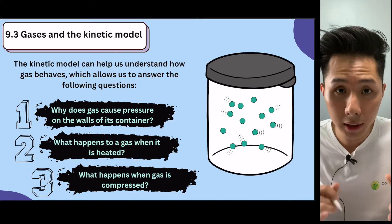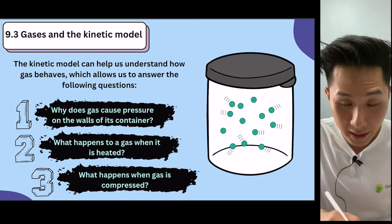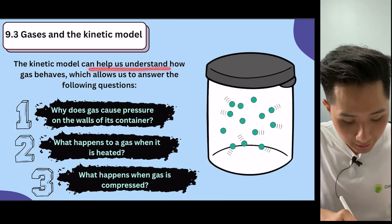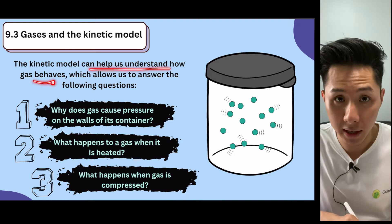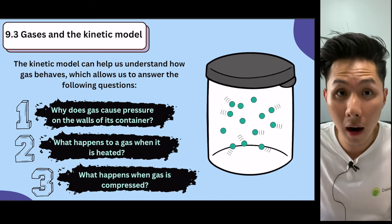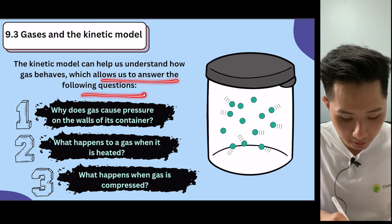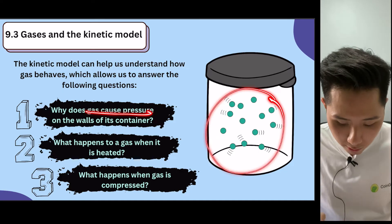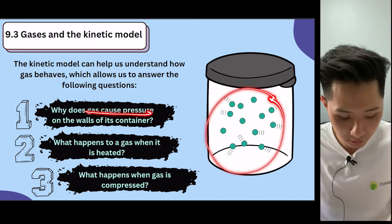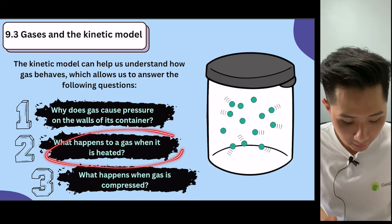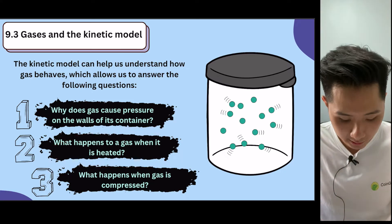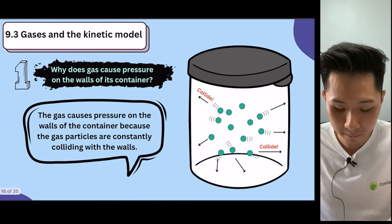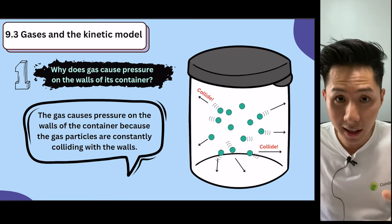And now we are going to dive deeper into the gases, the third type of matter. So the kinetic model can help us understand how gas behaves, how they move around. And this allows us to understand the following questions. Why does gas cause pressure on the walls of the container? What happens when a gas is heated? And what happens when gas is compressed?